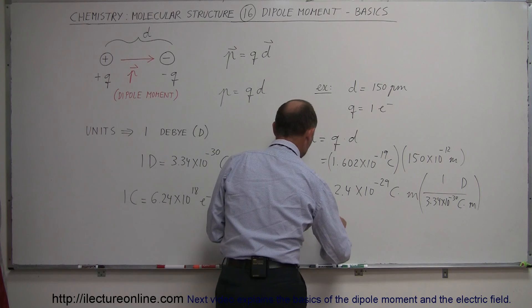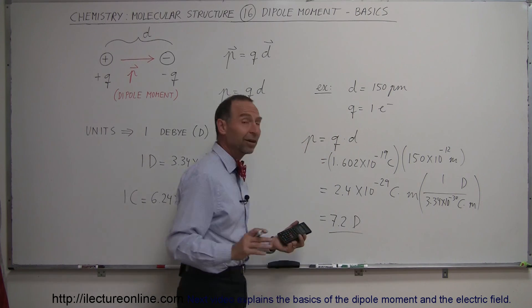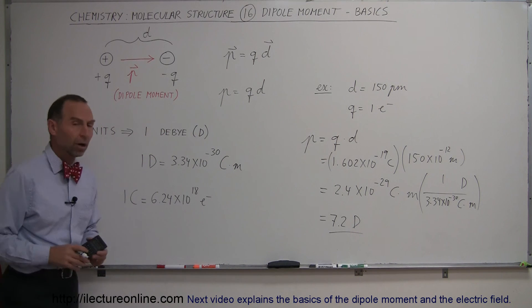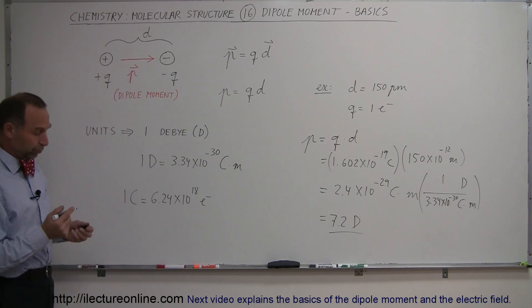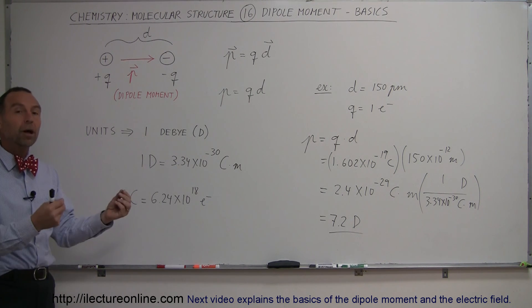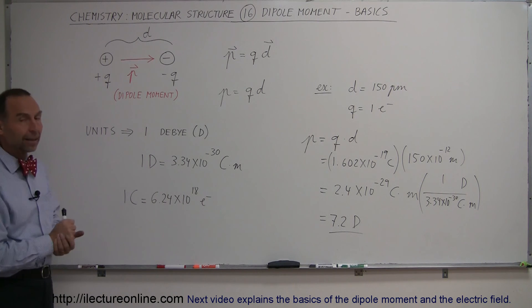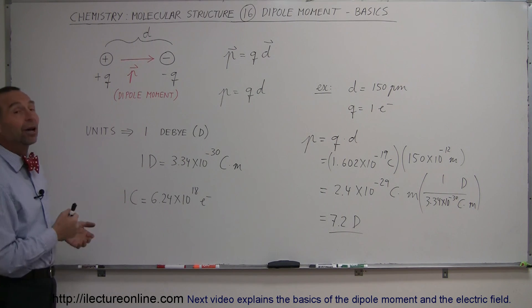So divide by 3.34 times 10 to the minus 30 equals... In this case, that would be equal to 7.2 Debye. So that's how you figure out the dipole moment of a dipole. We call those dipoles. And so most of the time when we have polar molecules, those polar molecules will be dipoles and we should be able to calculate the dipole moment of a molecule. And that's how you do that.